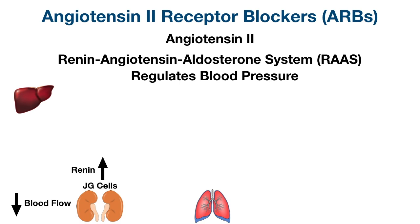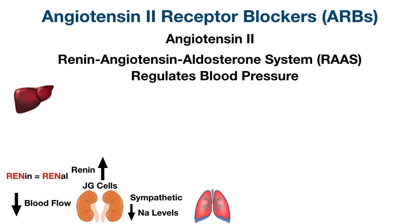So the kidneys release an enzyme called renin. Specifically, it's the juxtaglomerular cells, or JG cells, that secrete renin. You can think of renin and renal to help you remember that renin is released by the kidneys. The JG cells can also be activated by the sympathetic nervous system as well as decreased sodium levels in the distal tubule of the nephron.